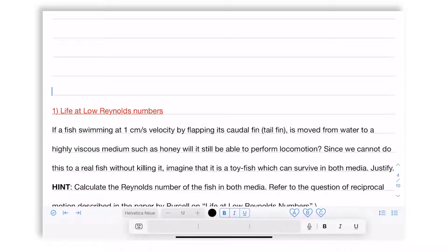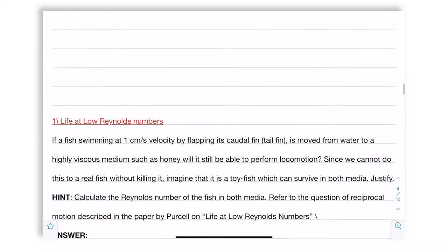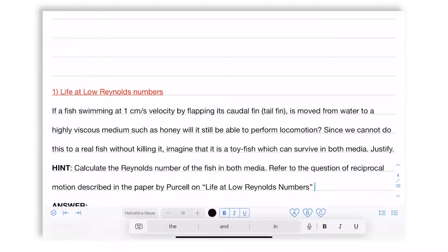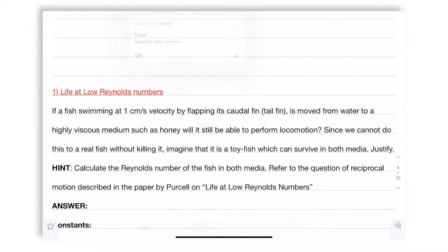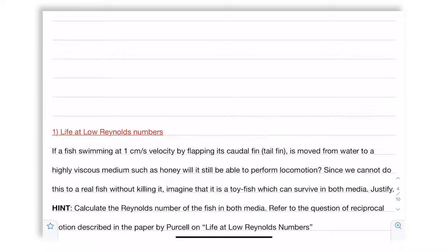Which means that you are not just expected to answer yes or no because that's not interesting. You want to know how you think. The hint to this problem is to calculate Reynolds number of the fish in both media and refer to the question of reciprocal motion.